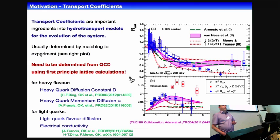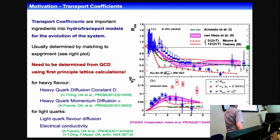The third motivation is to get information about transport properties, in this case the electrical conductivity — the light-quark diffusion coefficient. Here is an example of how important it is to get transport coefficients from lattice QCD calculations, because they are usually used as input into models that describe the evolution of the QGP or of the medium produced in heavy ion collisions.